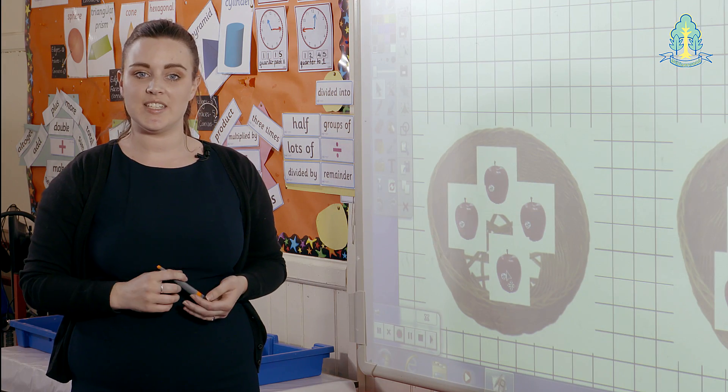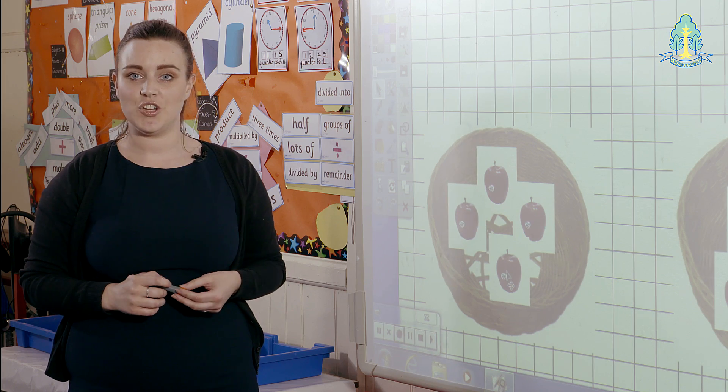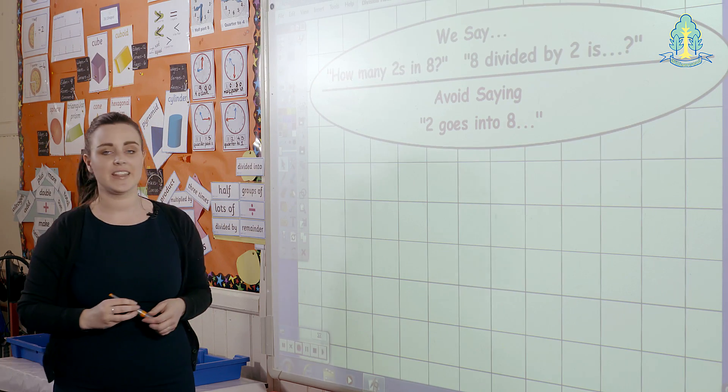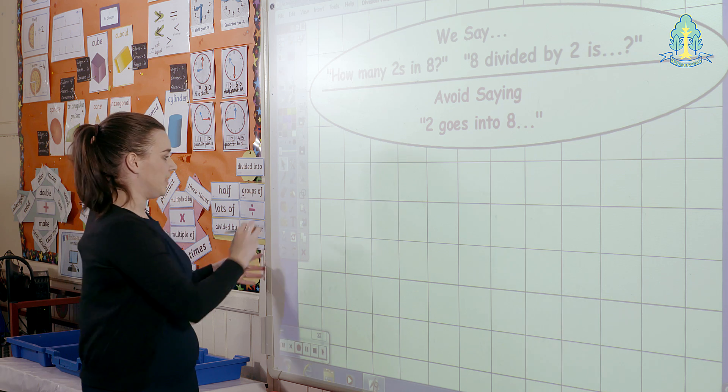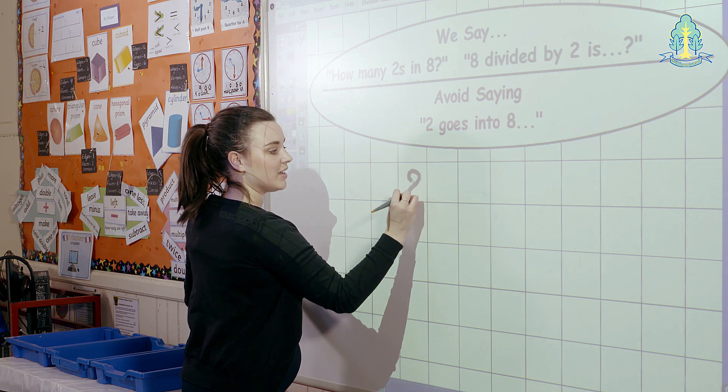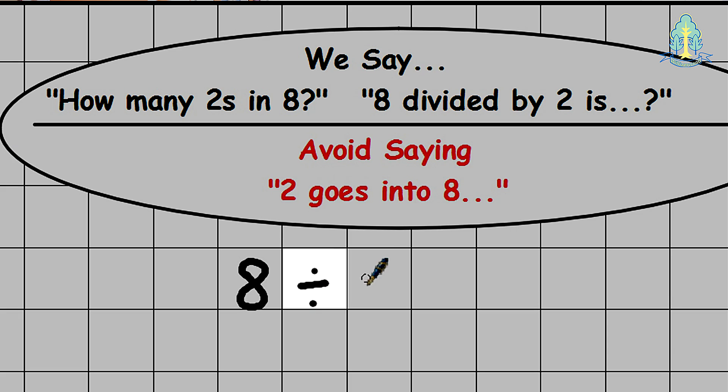Once children have a solid understanding of the concept of division using concrete materials, we would move on to writing the calculations down horizontally. Like this: 8 divided by 2 equals 4. We would say how many 2's are in 8, or 8 divided by 2 is.